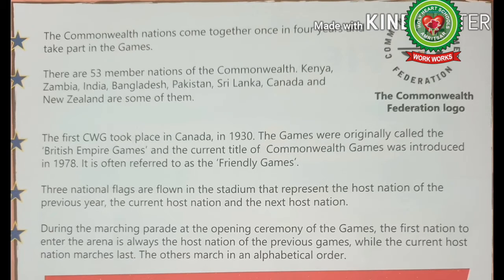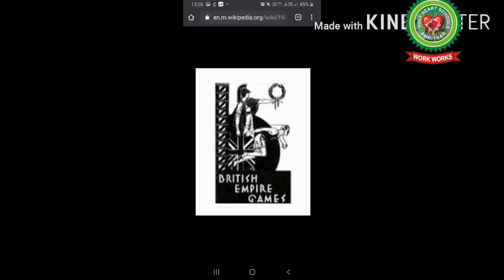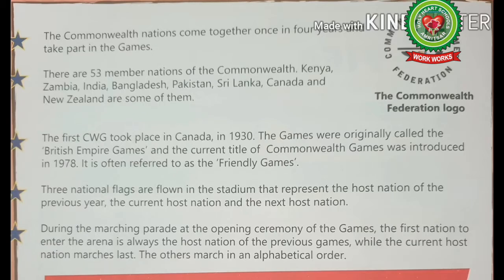Number three: the first Commonwealth Games took place in Canada in 1930. The games were originally called the British Empire Games, and the current title of Commonwealth Games was introduced in 1978. It is often referred to as the Friendly Games. Number four: three national flags are flown in the stadium, representing the host nation of the previous year, the current host nation, and the next host nation.